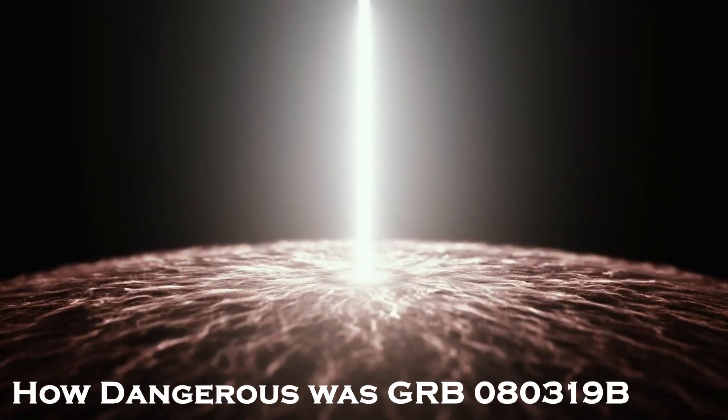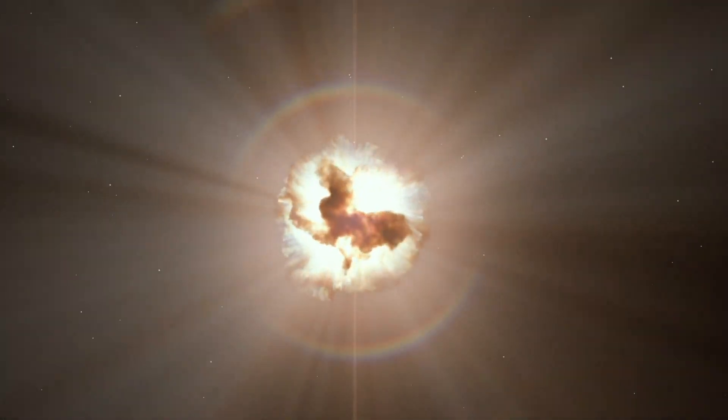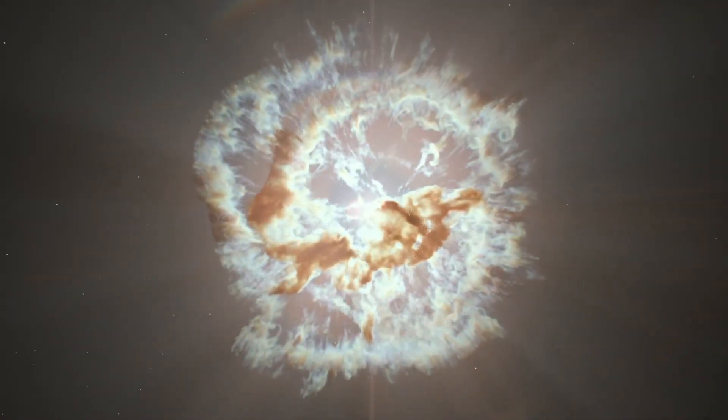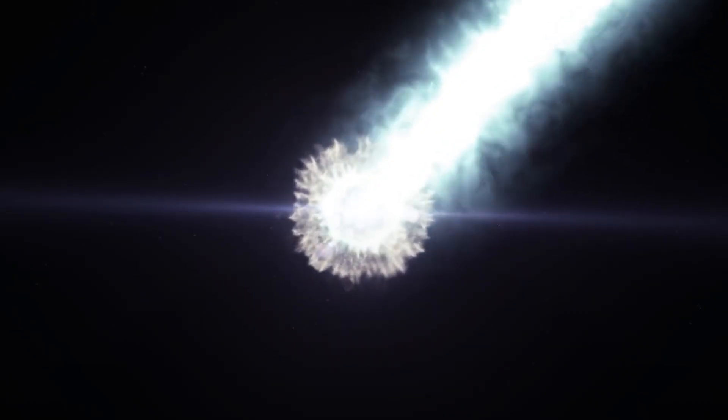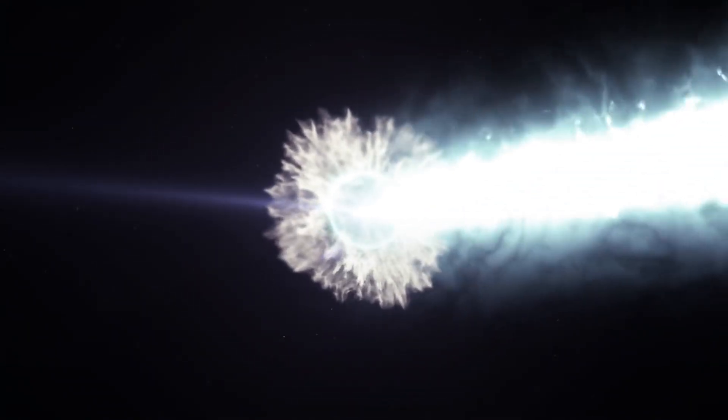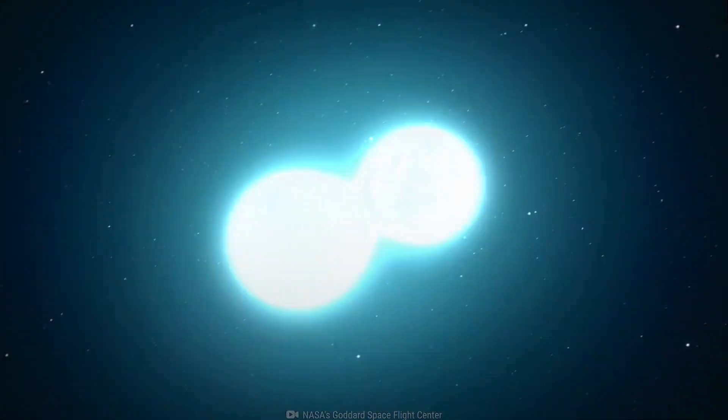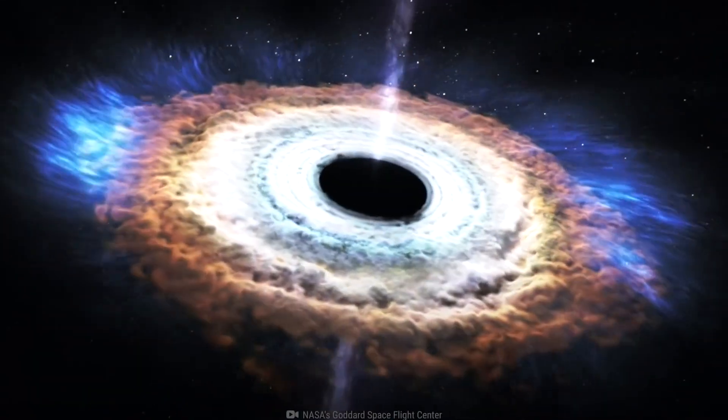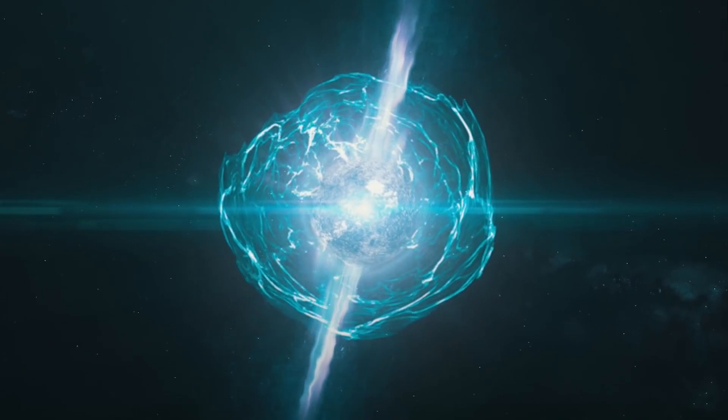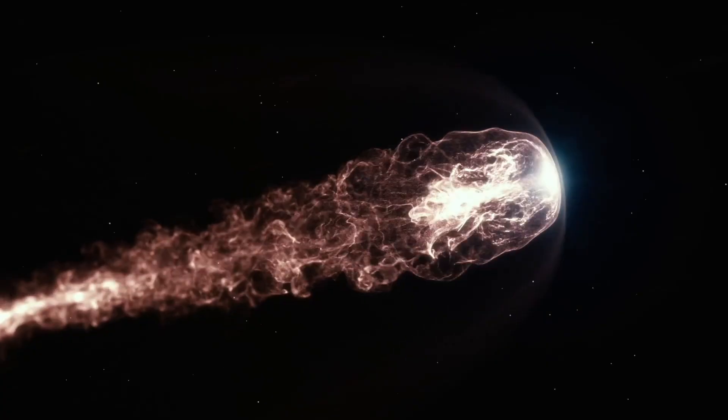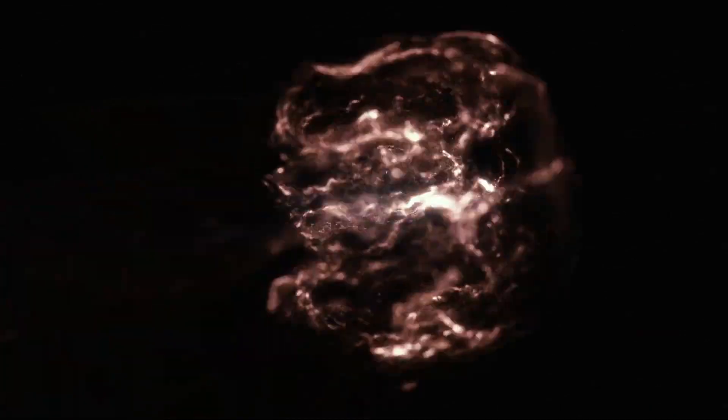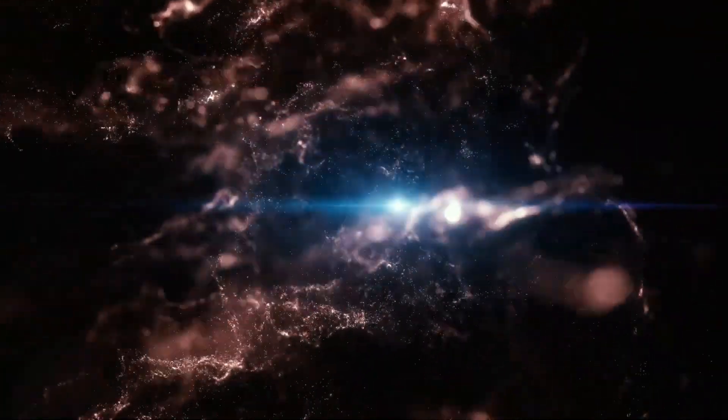How dangerous was GRB 080319b in the universe? Long-term effects on Earth of GRB 080319b, assessing potential consequences. GRB 080319b, despite its remarkable characteristics, occurred at a considerable distance from Earth, minimizing its direct impact on our planet. However, it is worth considering the potential long-term effects that such a burst could have on Earth if a similar event were to happen closer to our galactic neighborhood. We will explore the possible long-term consequences of GRB 080319b and similar bursts, focusing on factors such as ozone depletion, climate change.